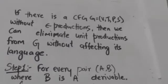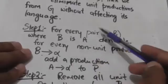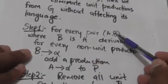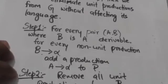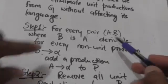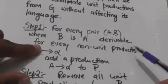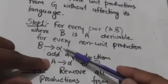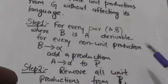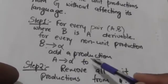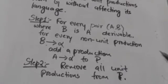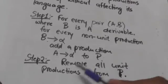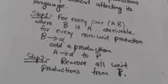The way to eliminate unit productions: the first step is, for every pair of variables A and B where B is A-derivable, and for every non-unit production B derives alpha, we will add a production A derives alpha to set P. After this, we will remove all unit productions from set P. This will be more clear after the following example.